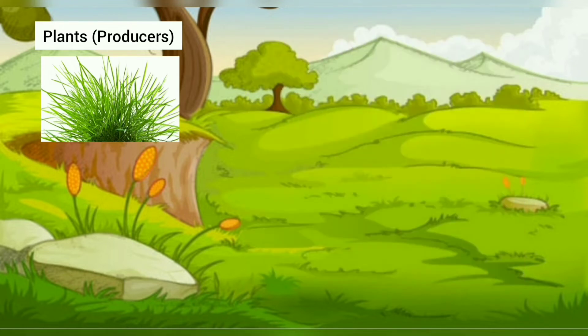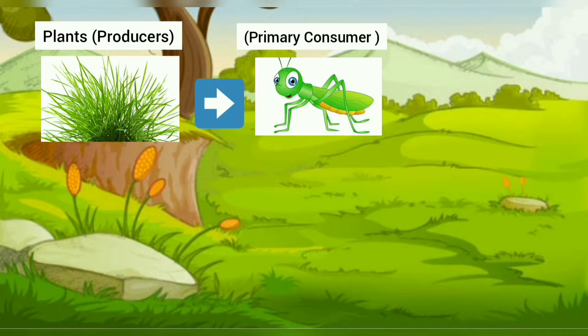After the producers are the consumers, which are the animals and humans. The primary consumers are mostly herbivores — the ones who only eat plants — like the grasshopper here.